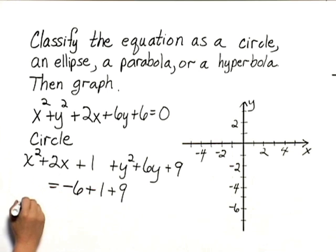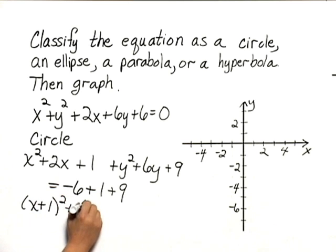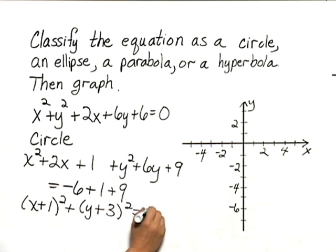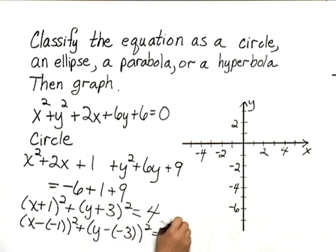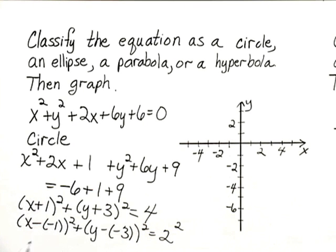And now we can factor. We have x plus 1 squared plus y plus 3 squared equals negative 6 plus 1 plus 9 is 4. Let's rewrite this so we can read the center and the radius. We have x minus negative 1 squared plus y minus negative 3 squared equals 2 squared. This tells us that the center is negative 1, negative 3, and the radius is 2.